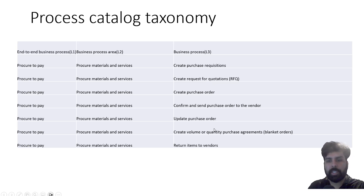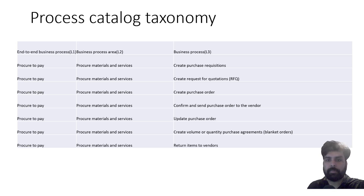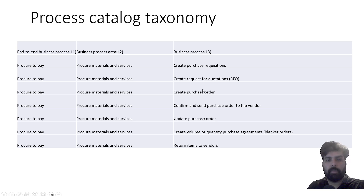As a functional consultant, when we start our process engagement and go to the customer, one of the deliverables we need to have is the process catalog taxonomy — what it is going to look like for this particular project or customer. There might be a few things the customer does not want to use, so we need to exclude them from our process catalog taxonomy.